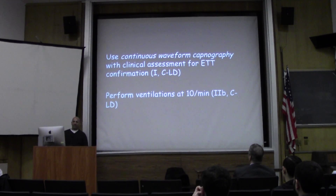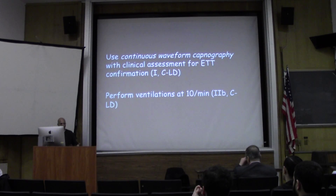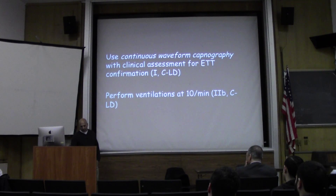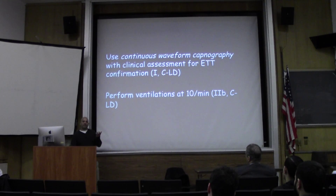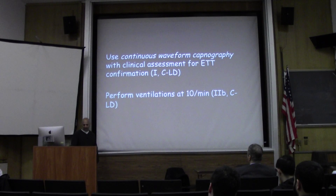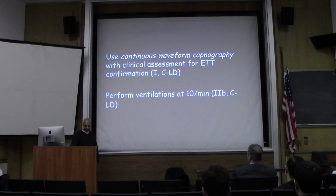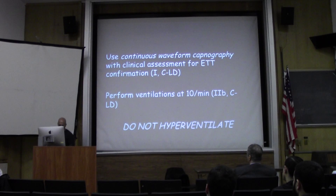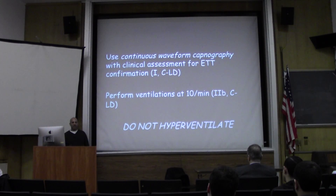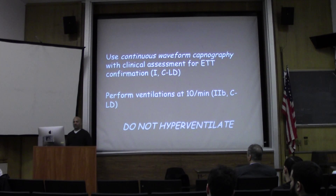Perform ventilations at 10 per minute — that's not very fast. But when studied, in cardiac arrest situations ventilation was performed inappropriately at rates greater than 25. As you increase your respiratory rate, what happens to your end-tidal CO2? It drops. So increased respiratory rates lead to reduced end-tidal CO2, which is our surrogate measure of perfusion. Do not hyperventilate — that's a big recommendation we all have to keep in mind. What happens when you hyperventilate? What does positive pressure ventilation do? It decreases venous return.